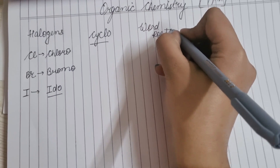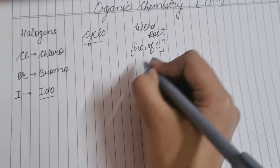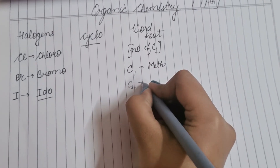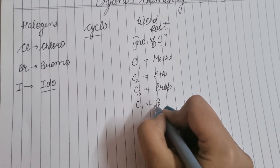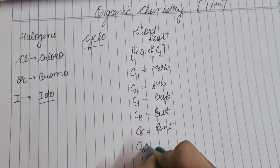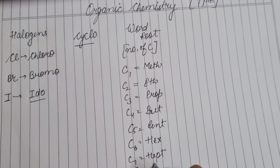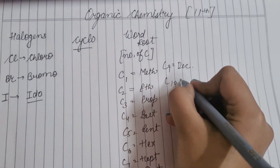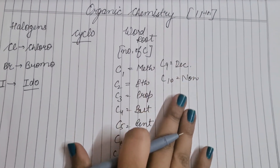Word root پر جانا ہے ہم نے۔ Word root کا مطلب ہوتا ہے number of carbons کتنے ہیں۔ اگر number of carbons 1 ہے تو مeth، carbon 2 کے لئے ith، 3 کے لئے prop، 4 کے لئے but، 5 کے لئے pent، 6 کے لئے hex، 7 کے لئے hept، 8 کے لئے oct، 9 کے لئے non، 10 کے لئے dec use کریں گے۔